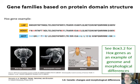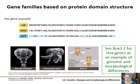In the antennapedia mutant you get legs growing where there should be antennae. There's another mutant called bithorax where you have an extra pair of wings. Look at box 3.2 for more of those examples.